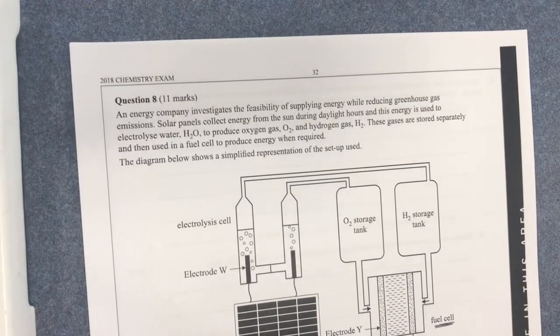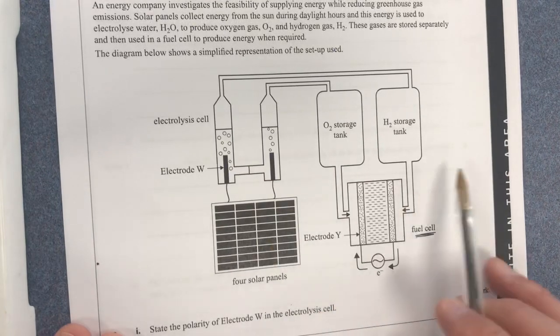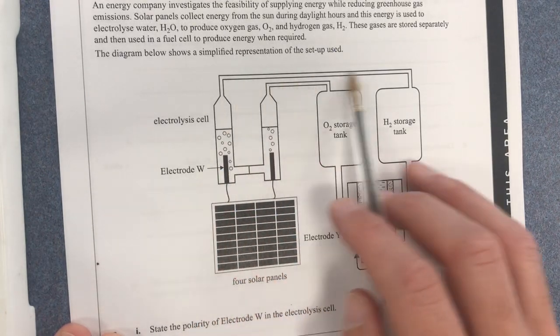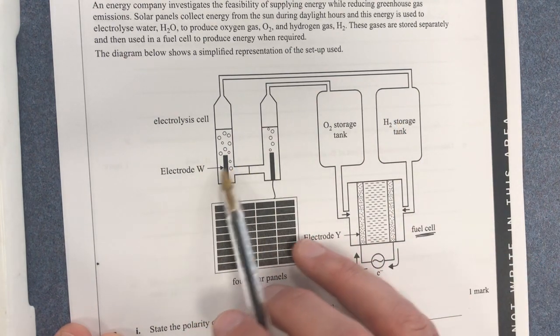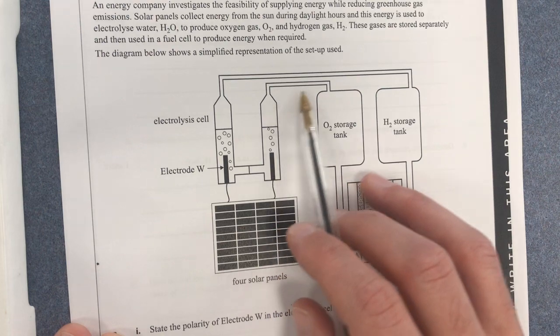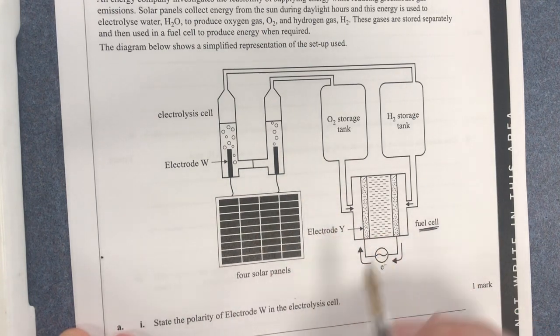So this is a really lovely, obviously renewable energy. This is the setup here. You can see the fact that the stuff at electrode W then goes into the H. At electrode W we're producing hydrogen and the other electrode is going to produce oxygen. Electrode Y is here, so that's pretty cool.